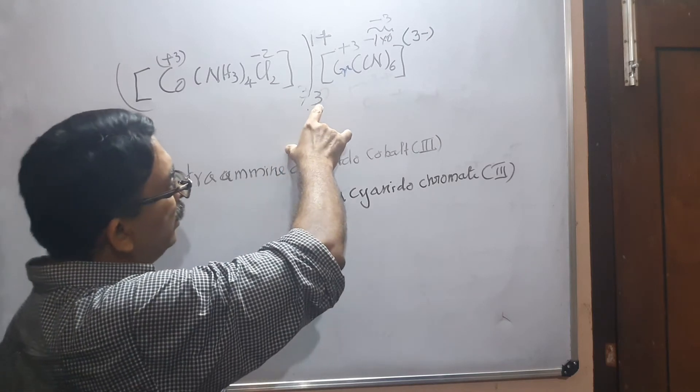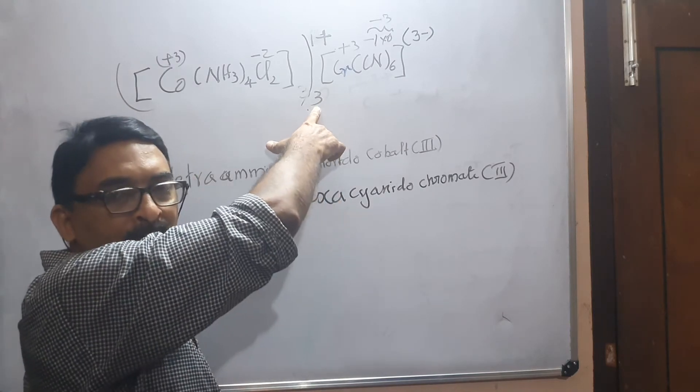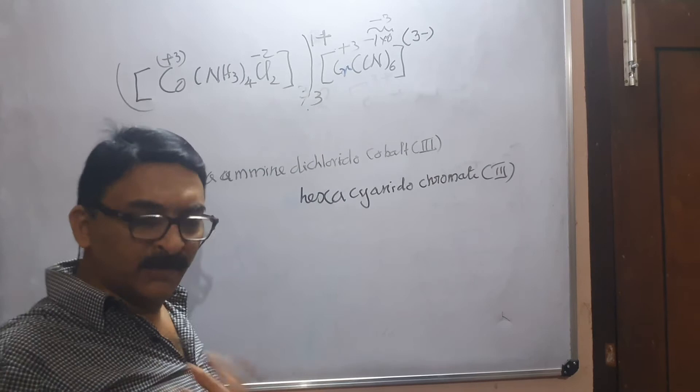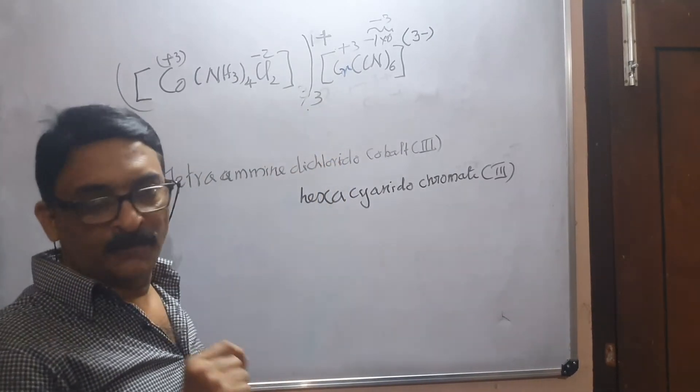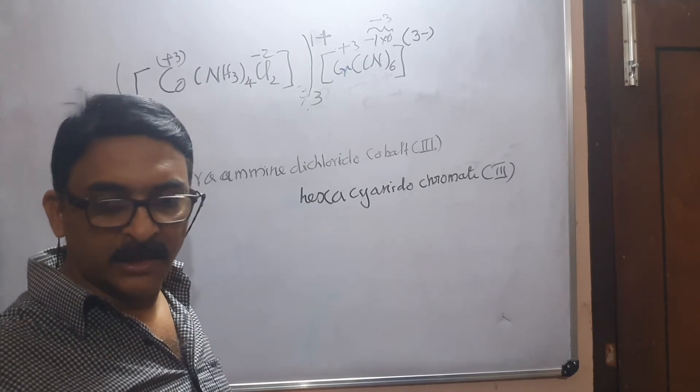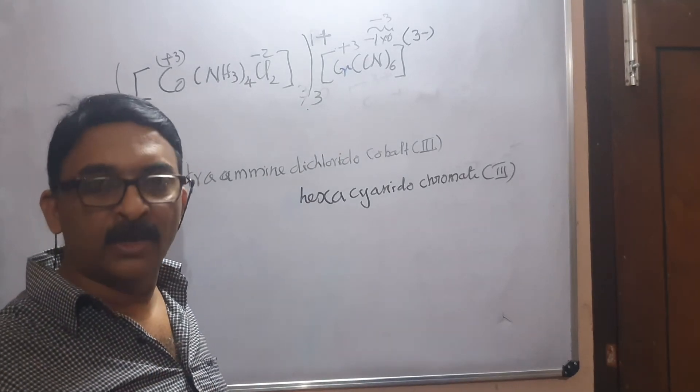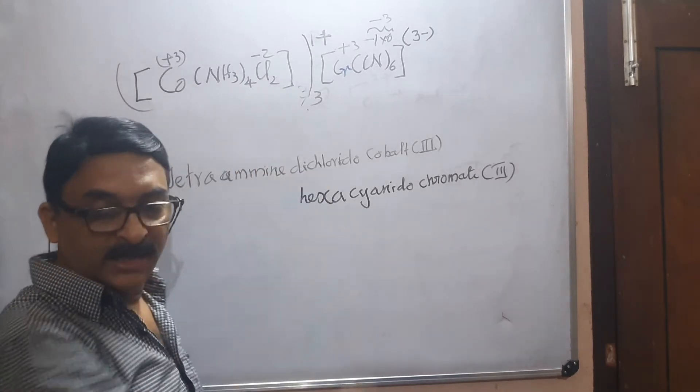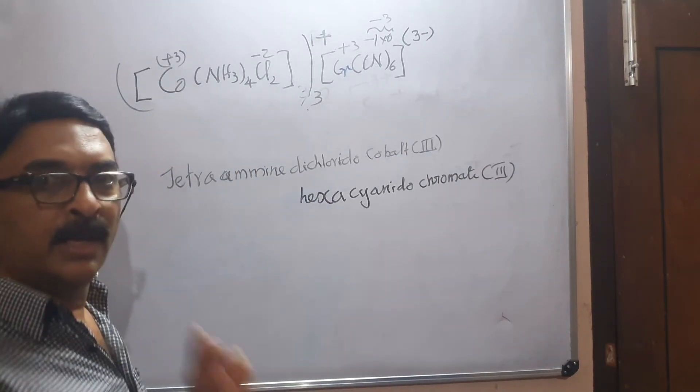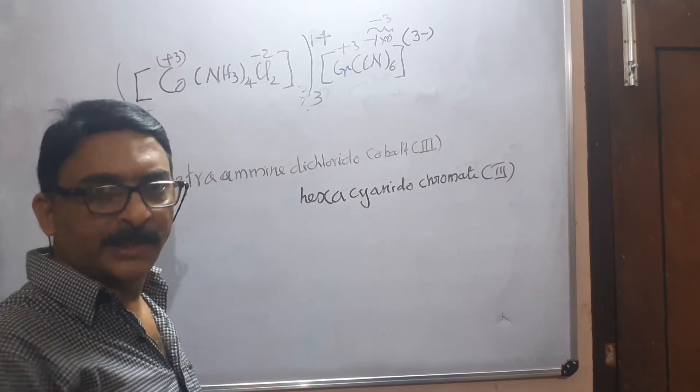Another thing you have to remember: we will never include this three in the naming because even without mentioning this number we will be able to write the formula. For that reason, the number of ions are never mentioned while you name, except the number of ligands in the complex.